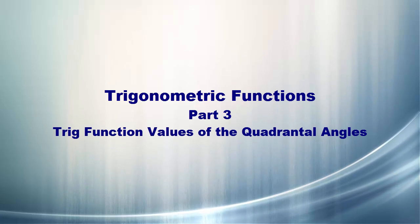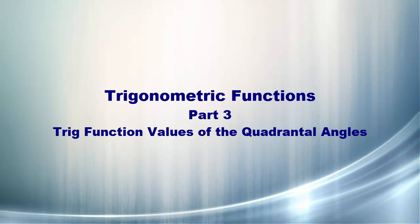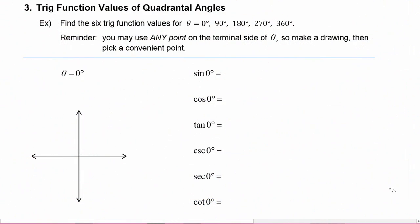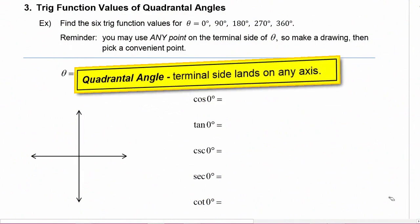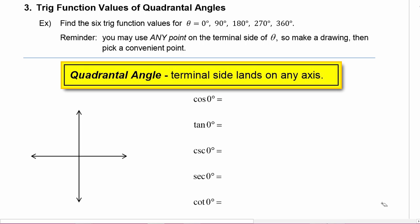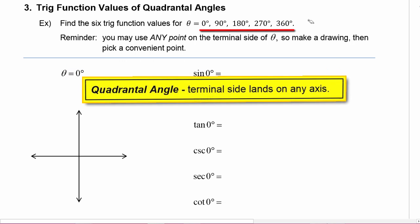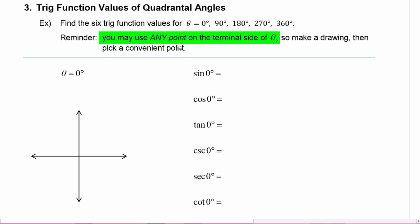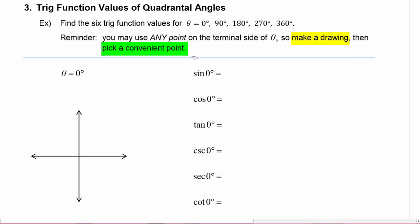In part three of our lesson on the trigonometric functions, we're going to learn how to find the trig function values of the quadrantal angles. Remember from an earlier lesson, the quadrantal angles are those angles whose terminal side lands on an axis. Going in the positive direction, that would be 0, 90, 180, 270, 360, etc. We just learned that you can use any point on the terminal side of theta to find the trig function values, so we're going to make a drawing for each angle and then pick a convenient point to use.